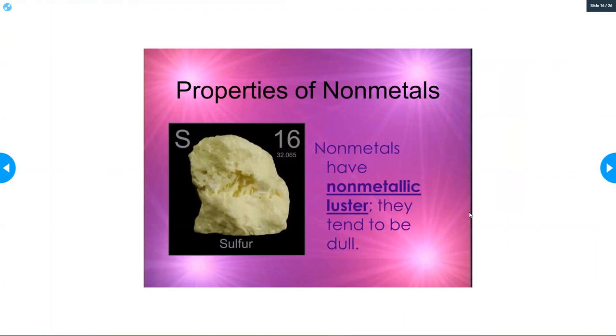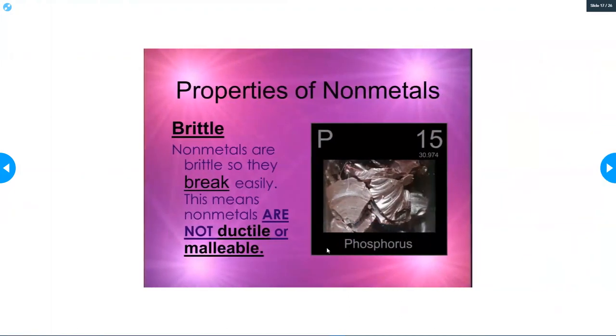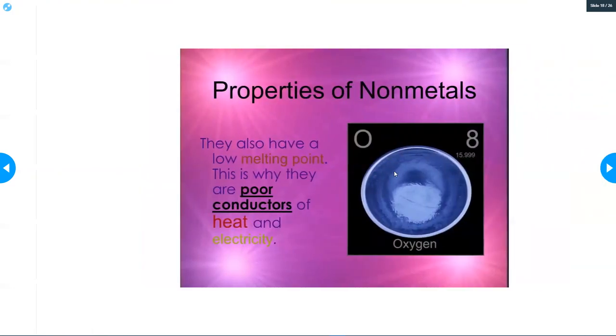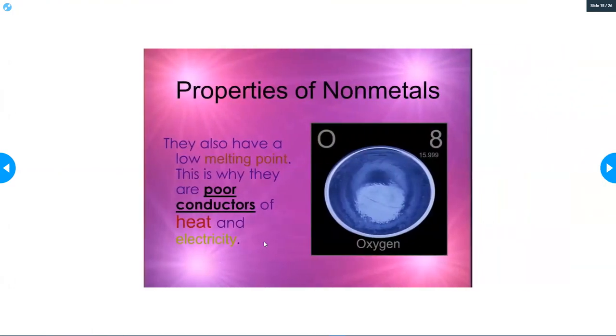Properties of nonmetals: they are the exact opposite of metals. They do not have a shiny luster - they're going to be dull. They're going to be brittle. So they're the exact opposite of metals. They're not ductile or malleable - they're brittle, so they break easily. They also have a low melting point, and they're not good conductors.